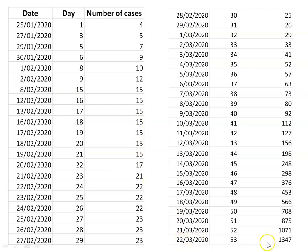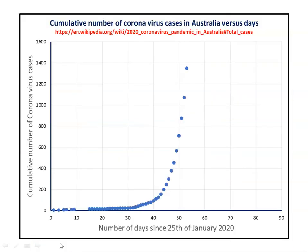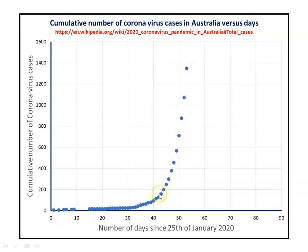This data goes all the way up until today, the 22nd of March, when there were 1,347 confirmed cases of COVID-19 in Australia. If we plot this against the number of days since the 25th of January, we get a plot where the number of cases is really taking off — it looks very exponential. The goal of this video is to find a mathematical model which describes this apparent exponential growth.